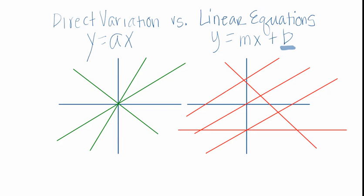Because, by definition, a direct variation equation is a line.